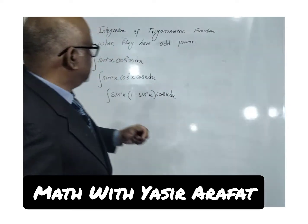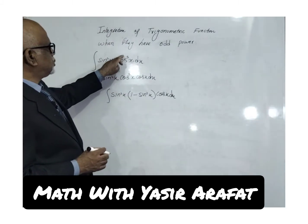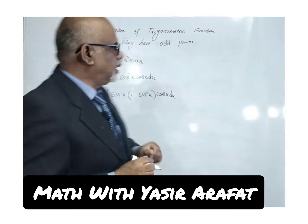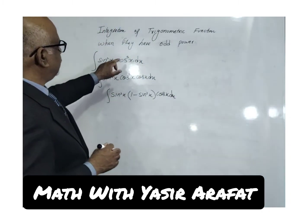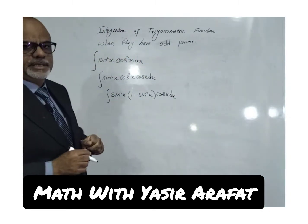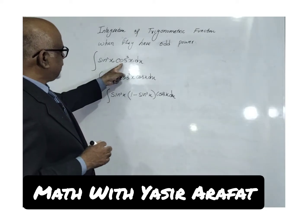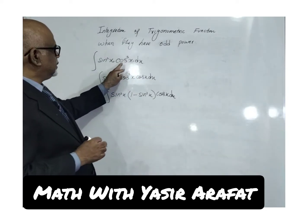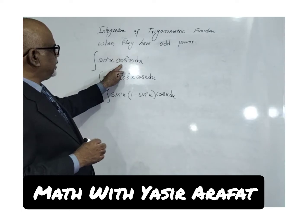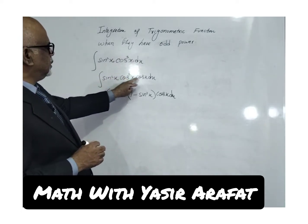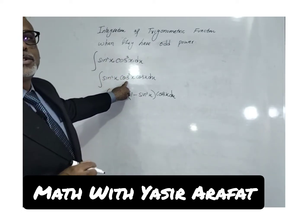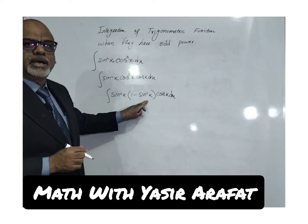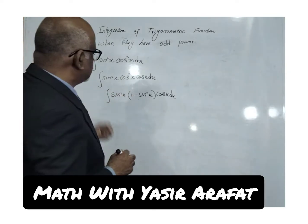Again, listen dear students. This is cos³x. The technique for odd power is: separate a linear function from that odd power — that is, separate cos x from cos³x. Then change cos²x into its relative formula, which is 1 - sin²x.